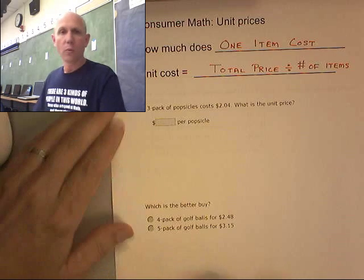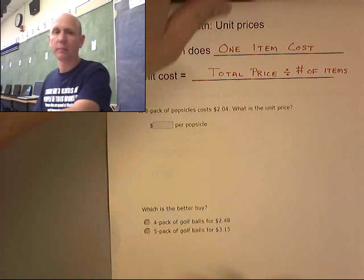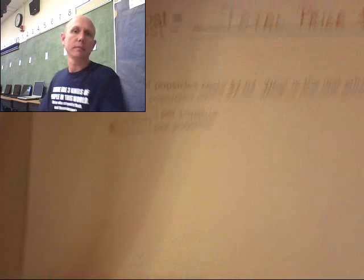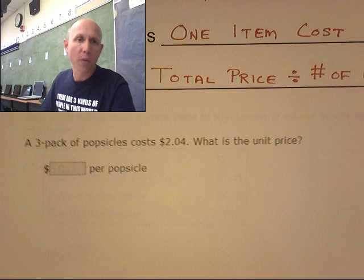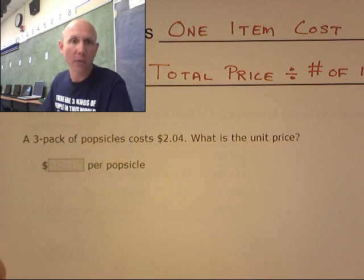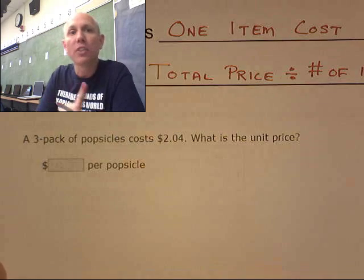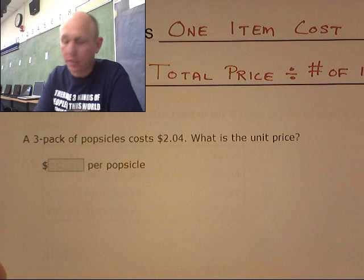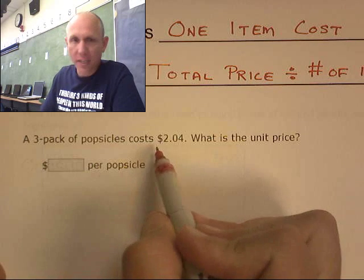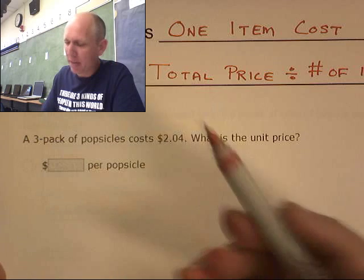So watch this guy in action. A three-pack of popsicles costs two dollars and four cents. What is the unit price? How much does one popsicle cost? Well, you know, I'm estimating here. It's going to be about 60, 65, 68 cents, somewhere in that realm. Let's see.